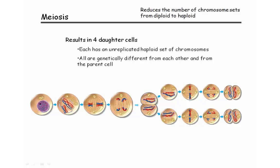Crossing over produces recombinant chromosomes — new chromosomes that we did not have before. Make sure that you are familiar with the different stages of meiosis and that you will be able to recognize drawings of the stages on the exam. You also want to be able to compare these with the mitosis phases.